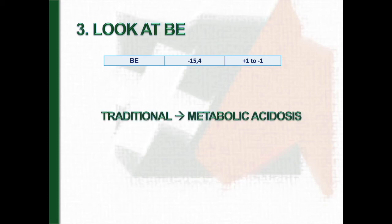In the third step, we look at the base excess. In this case, it's also below the normal value. This indicates that we must look for a metabolic alteration that causes acidosis.